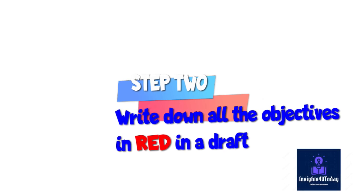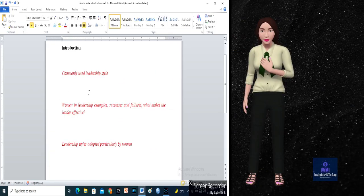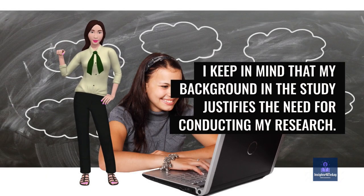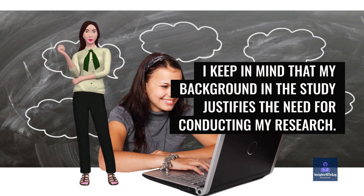Step 2. I write down all the objectives in red in a draft like this. The purpose of this is to create a precise sequence for my introduction. I keep in mind that my background in the study justifies the need for conducting my research.